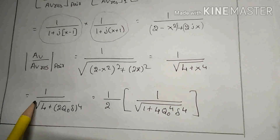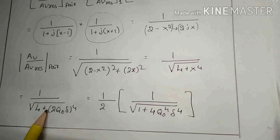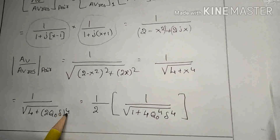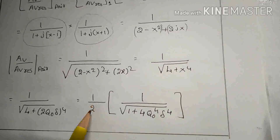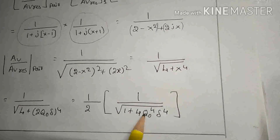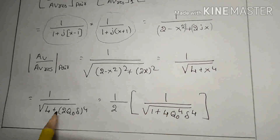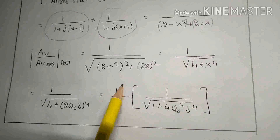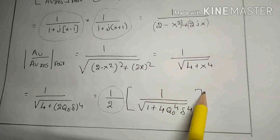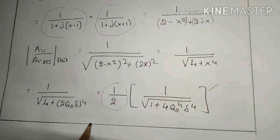Therefore, AV/AV-resonance of the pair equals 1 over √(4 + (2·Q₀·δ)⁴), which equals (1/2) times 1 over √(1 + 4·Q₀⁴·δ⁴). From the pair root we bring 1/2 outside, giving the final equation. This completes the explanation of the stagger-tuned amplifier.